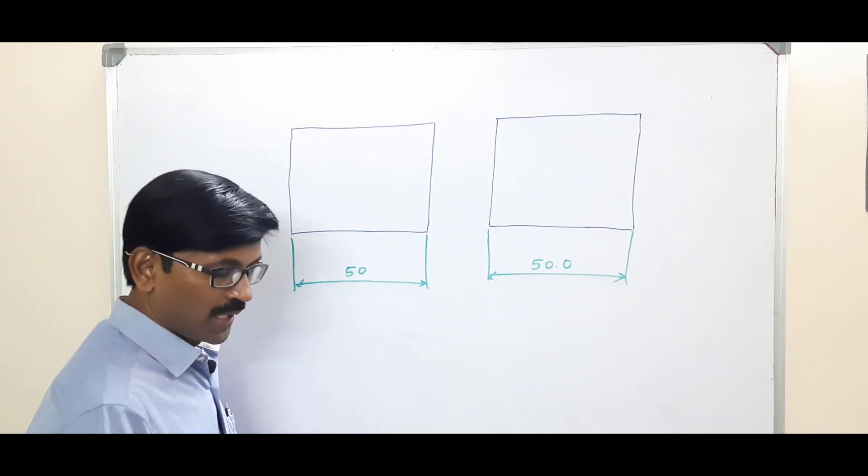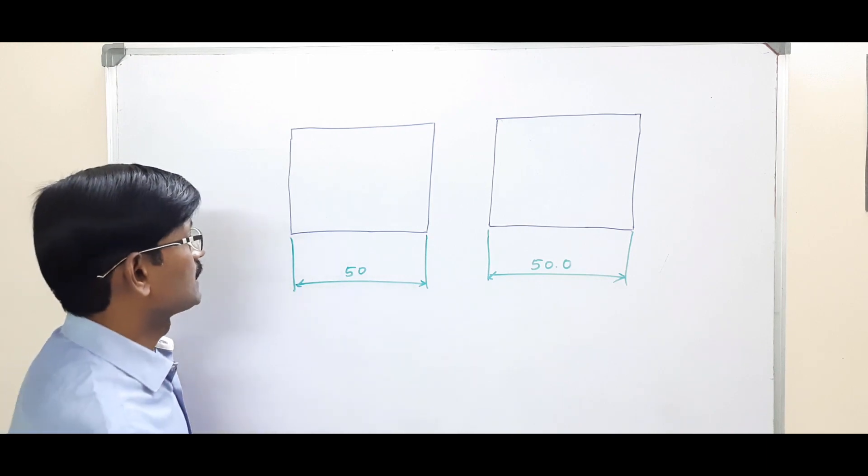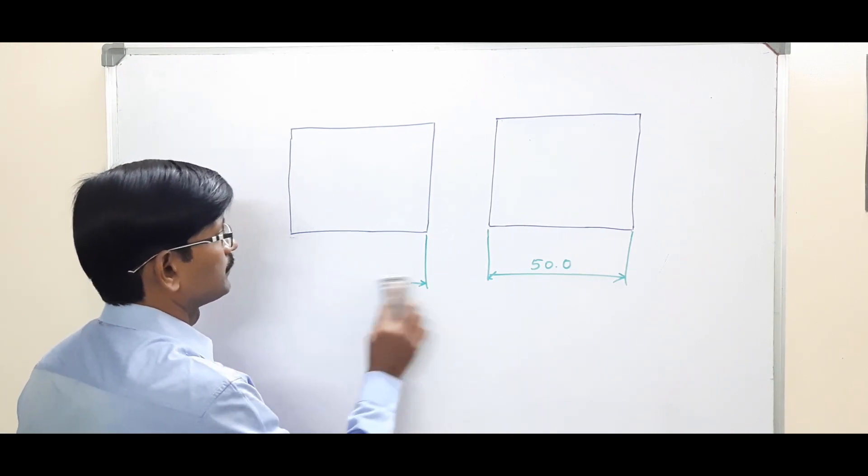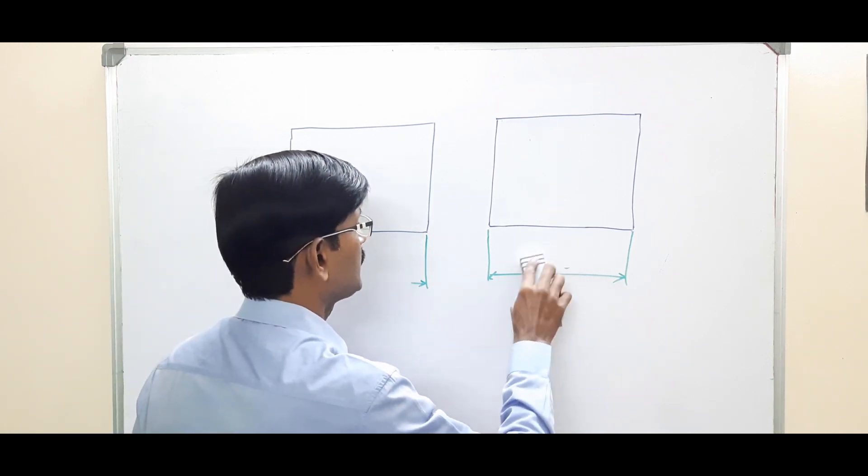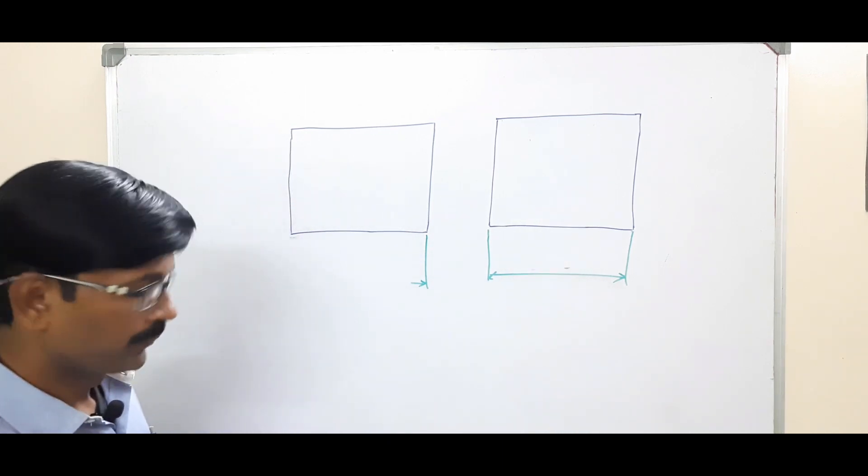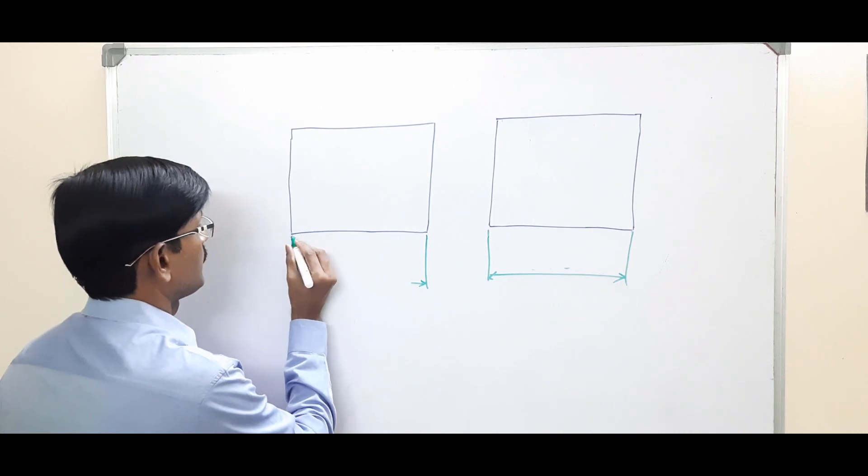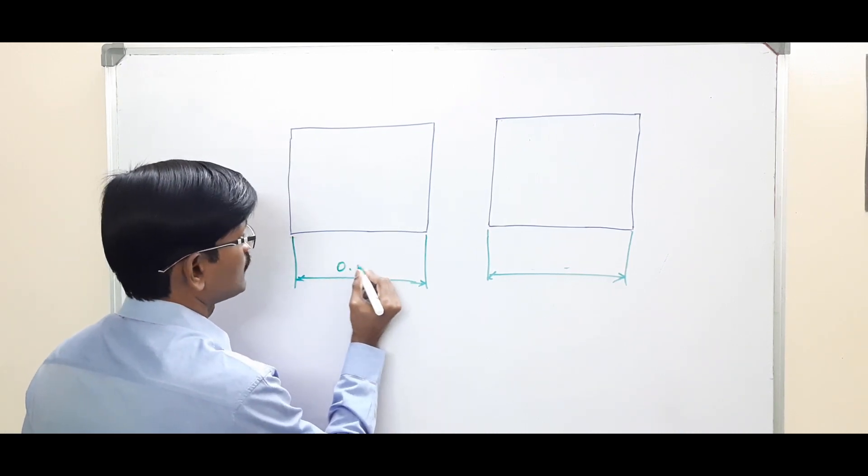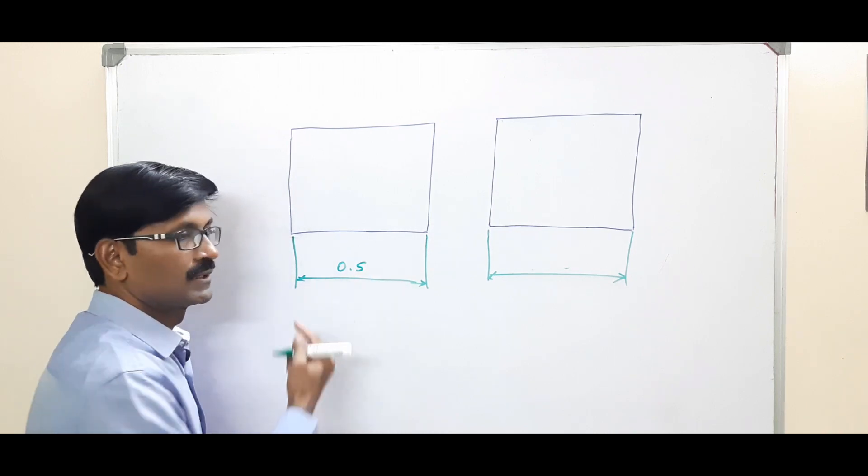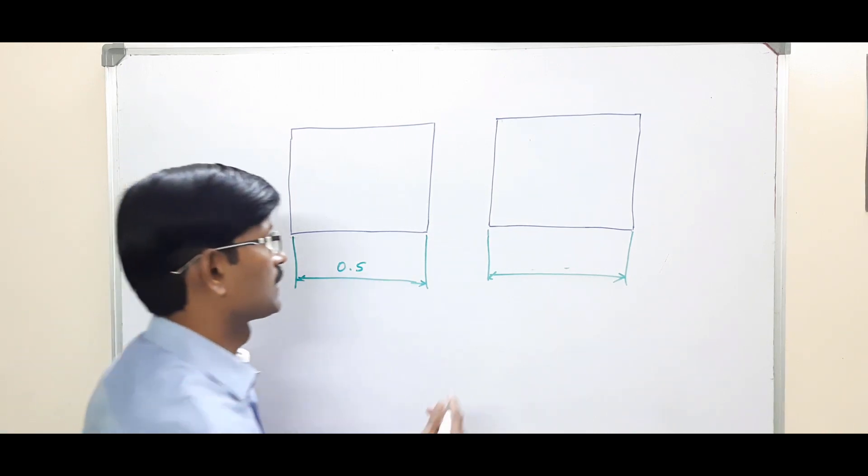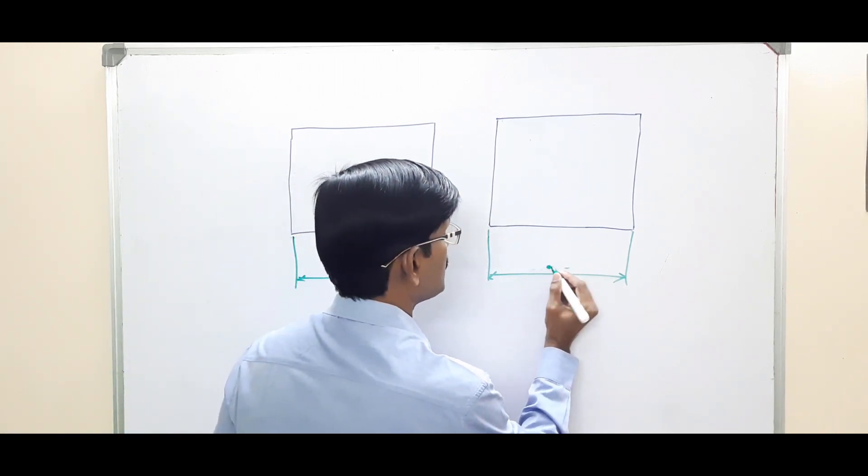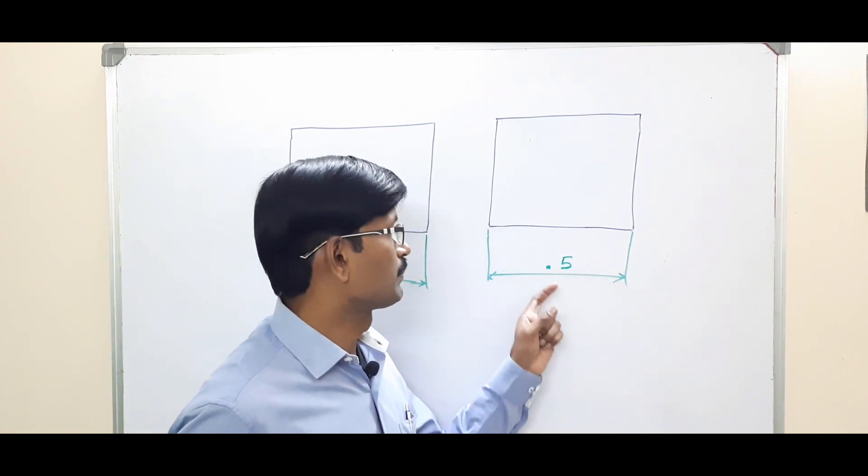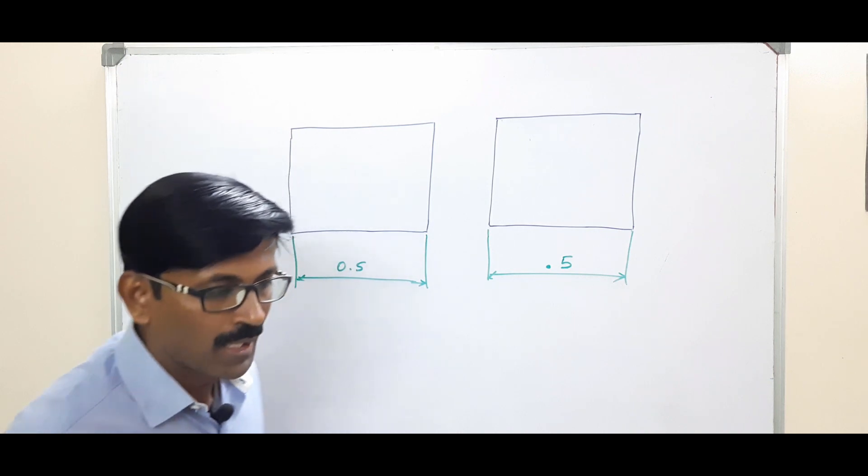Whenever the dimension is less than a millimeter, let's say it is less than a whole number—in this case, 0.5—then we write it as 0.5, which means it is 0.5 millimeters. Whereas in this case, we just write the decimal point and then write 5, so this is 0.5 inches.